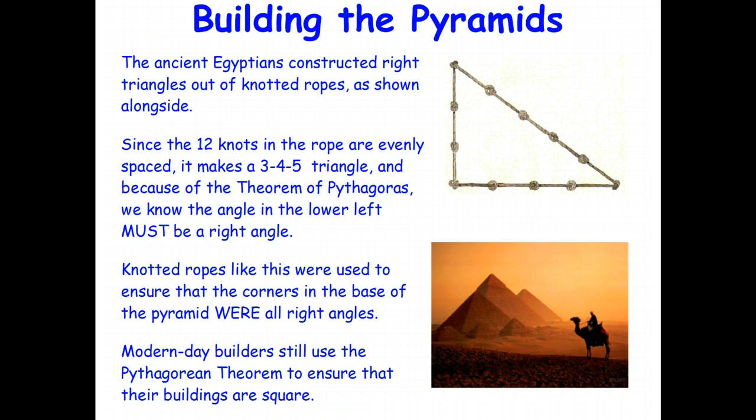The ancient Egyptians knew about the Pythagorean theorem. So if they took a piece of rope, put 12 knots in it, equally spaced, and then tied it into a loop, it turned out they could use that rope to make a triangle. And it turns out from the Pythagorean theorem that this angle down here is a right angle triangle.